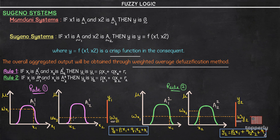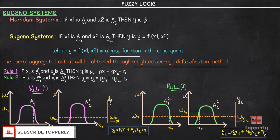Here x1 and x2 are the inputs in the case of Rule 1, and x1 and x2 are also the inputs in the case of Rule 2. y1 is the output for Rule 1 and y2 is the output for Rule 2, and mu in all these graphs represents the membership values.